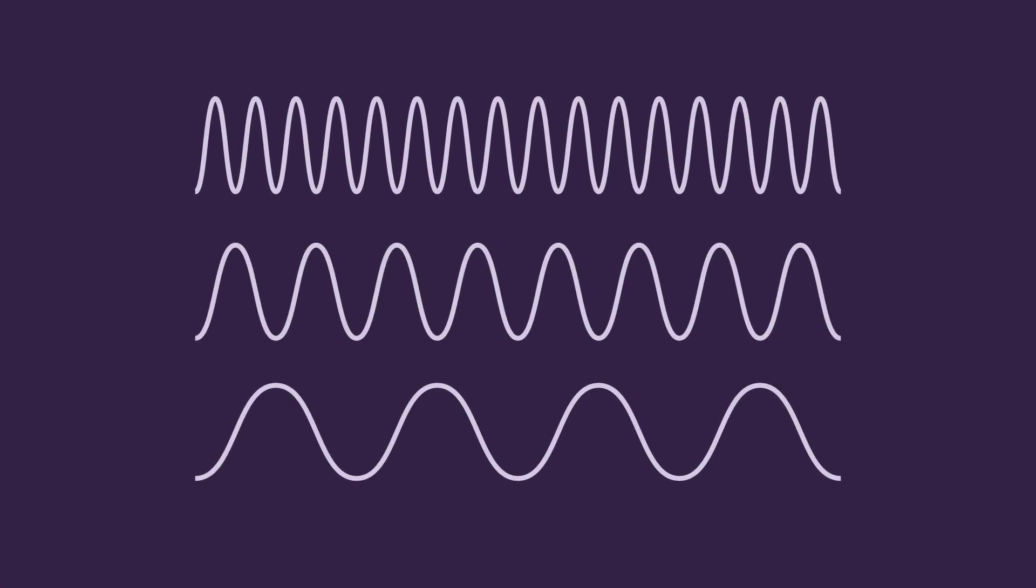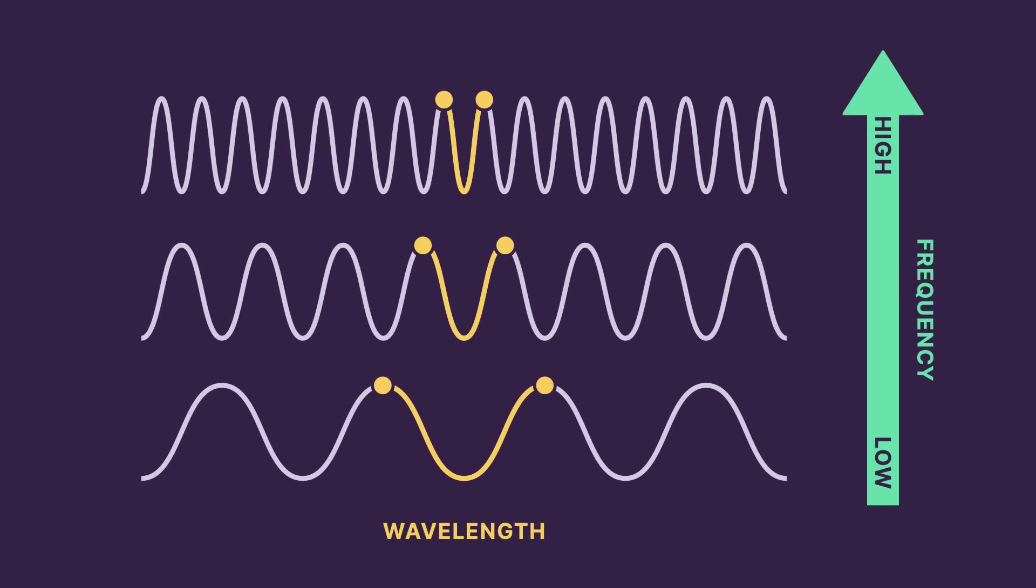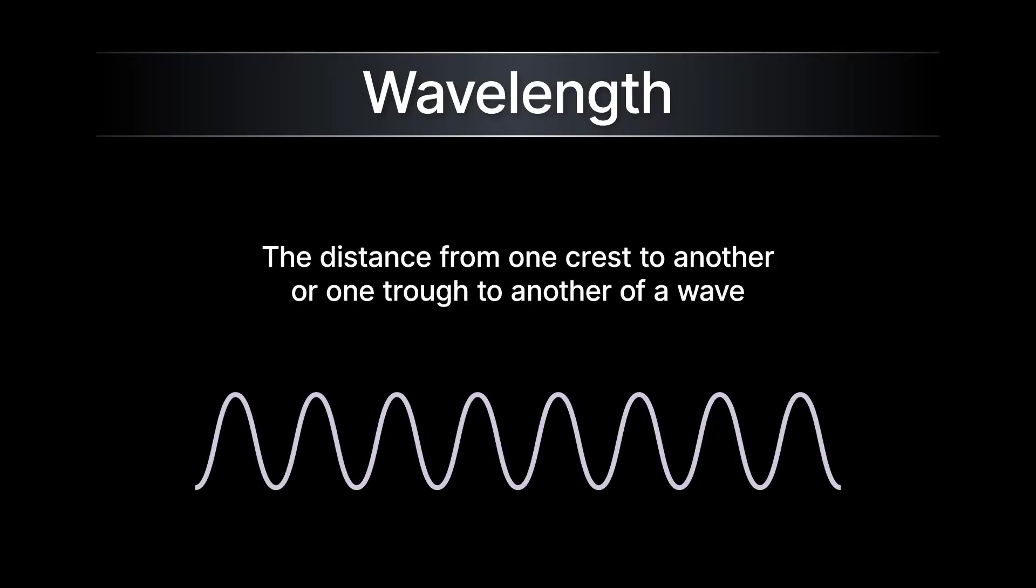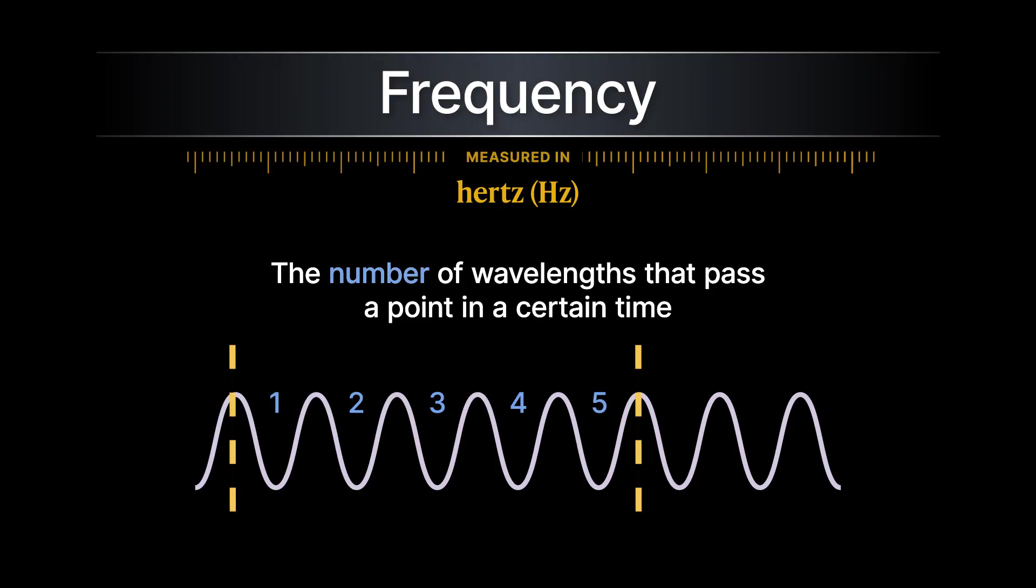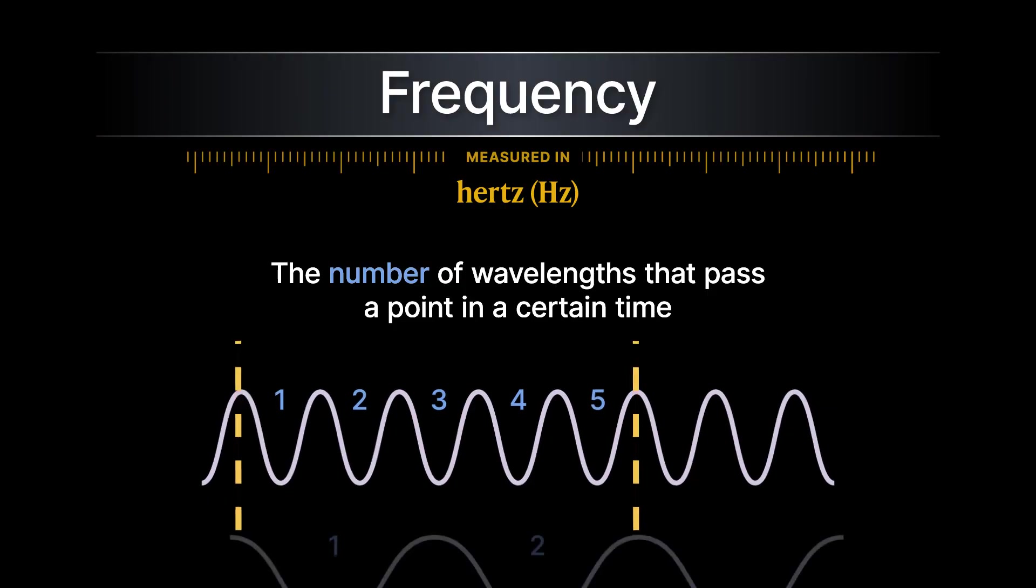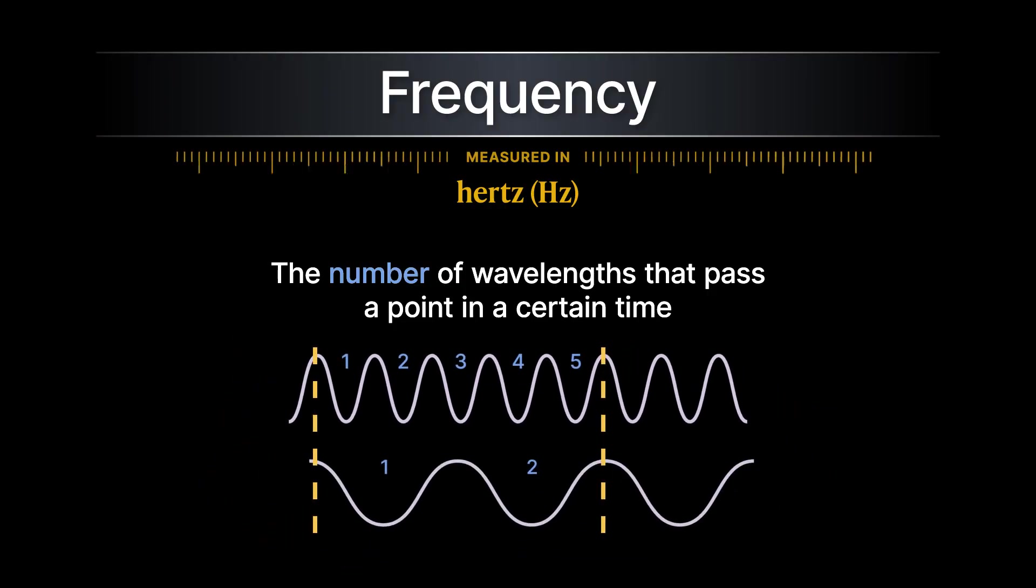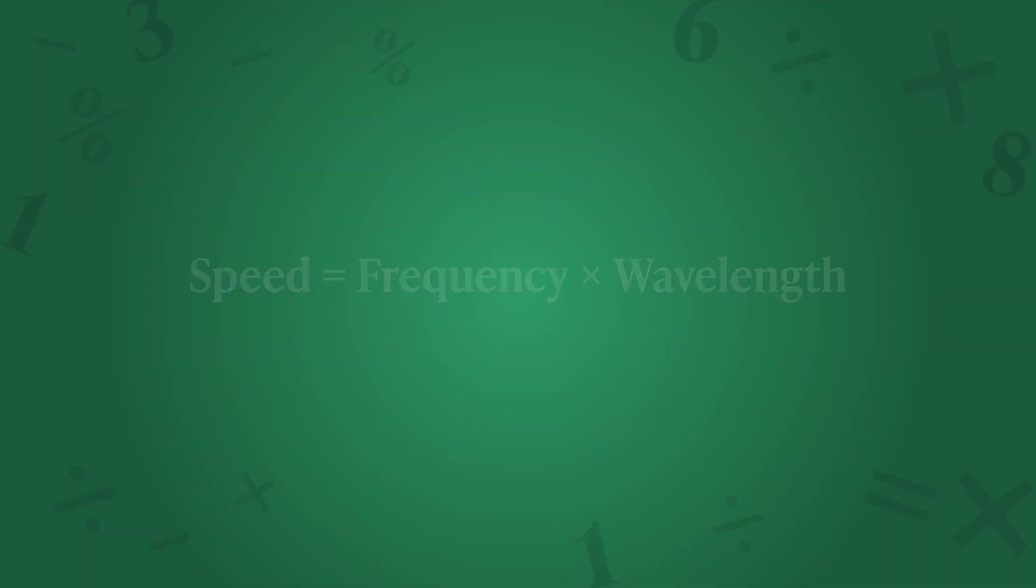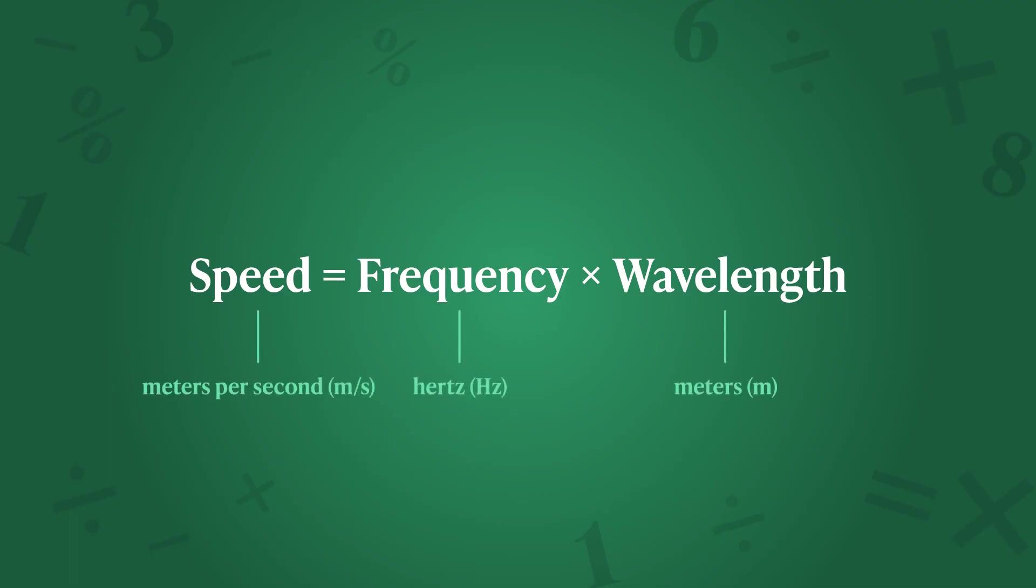Most waves share the specific properties of wavelength and frequency, which influence the amount of energy they transfer and at what speed. The wavelength is the distance from one crest to another, or from one trough to another, of a wave. A wave's frequency is the number of wavelengths that pass a point in a certain time and is measured in hertz. Knowing the frequency and wavelength allows us to determine the speed of sound with the equation speed equals frequency times wavelength.